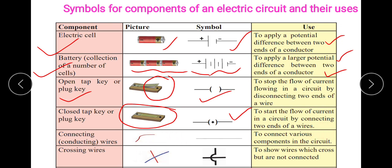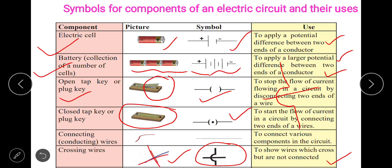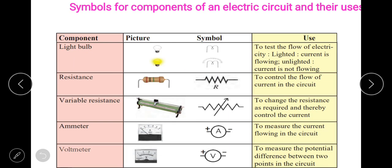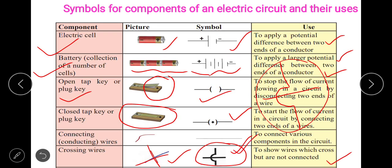Now, when wires are crossing each other, that means they are connected. But when we want to show they are not connected — suppose a wire is going like this and you put a cross mark — at that time we say the wire is not connected. To show wires which cross but are not connected, you use a cross symbol. See the red wire and the blue wire going across but not connected — symbolically, you have to show it like this to indicate they are not tapping at that point.